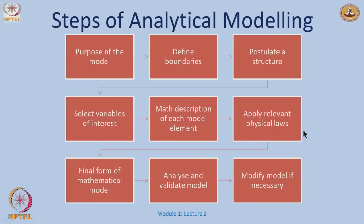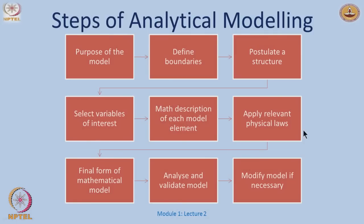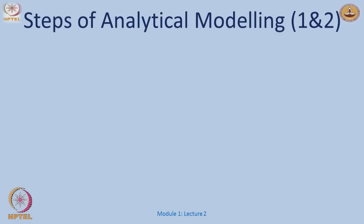For analytical modeling, the steps are: first, define the purpose of the model — as in the interview example. Second, define the boundaries of the system. Third, postulate a structure. Fourth, select the variables of interest and look at the mathematical description of each element. Fifth, apply relevant physical laws. Sixth, arrive at a final mathematical model form. Finally, validate the model to check if the behavior is correct, and modify it if necessary.